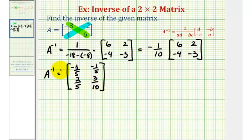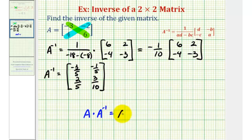So now that we've found the inverse of matrix A, this means that matrix A times A inverse would be equal to A inverse times A, which is equal to the identity matrix — in this case a two-by-two identity matrix. Let's go ahead and check this product on the next slide.